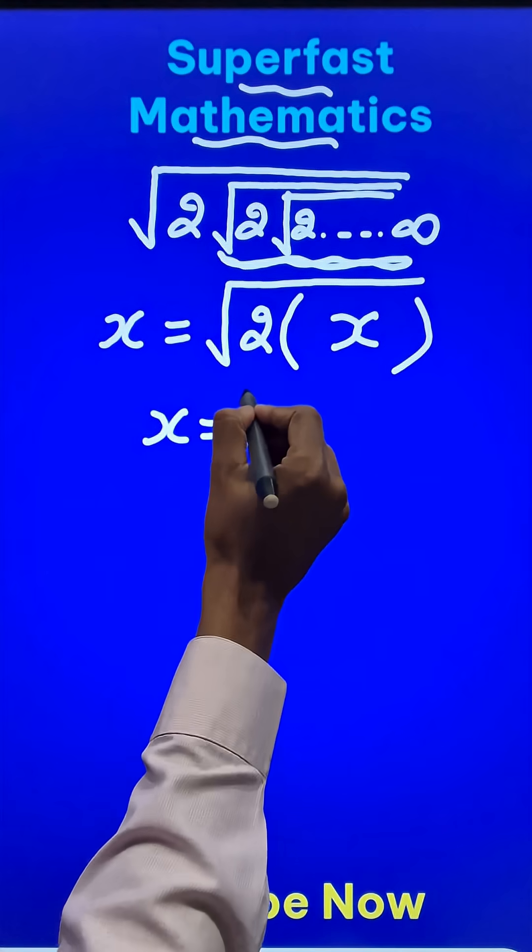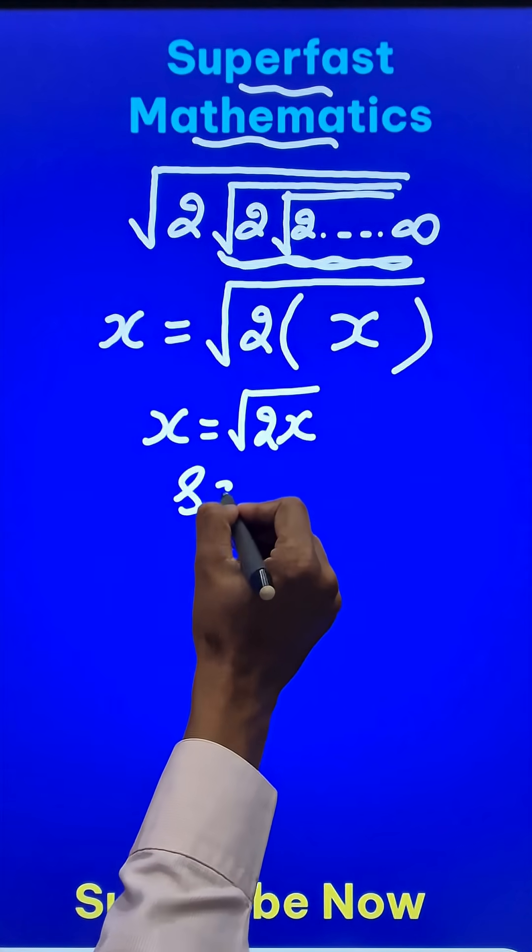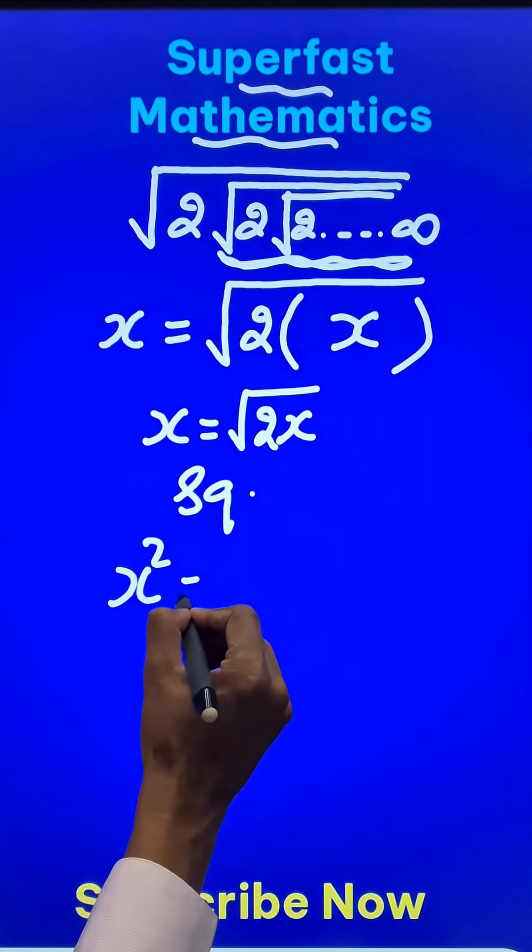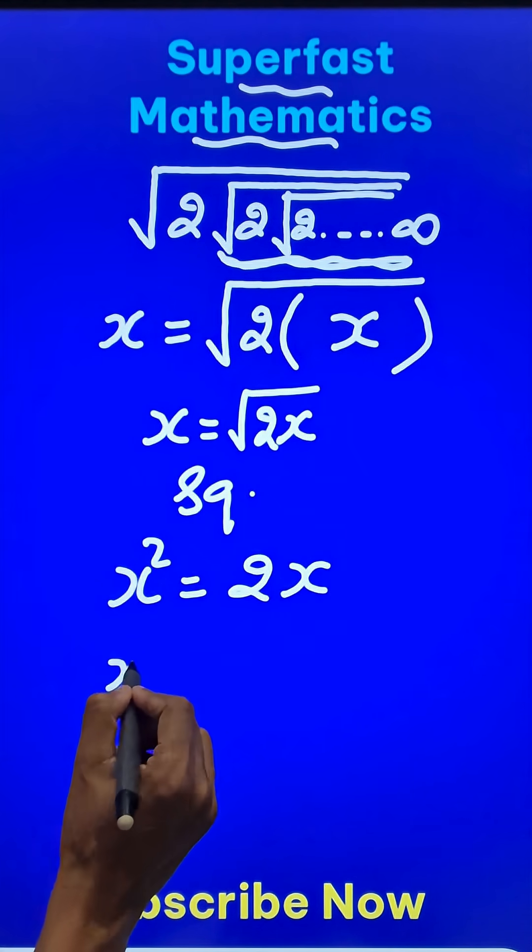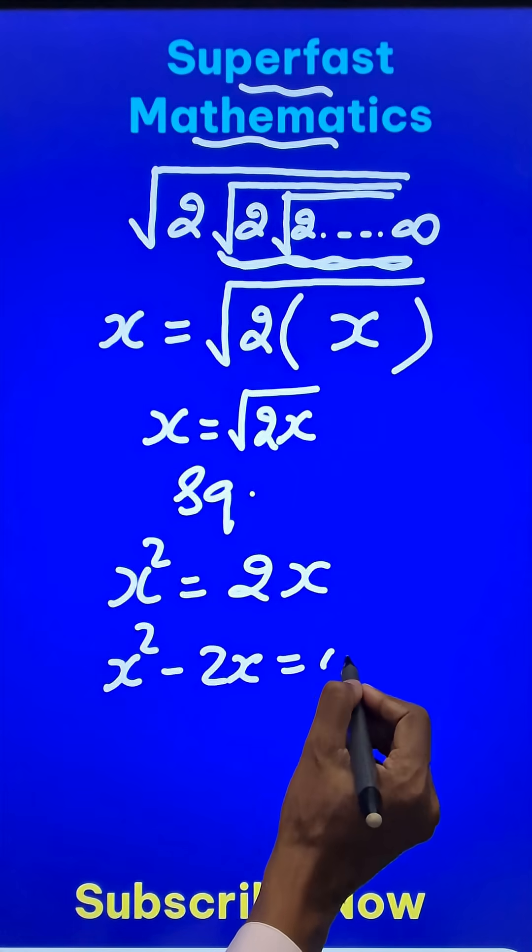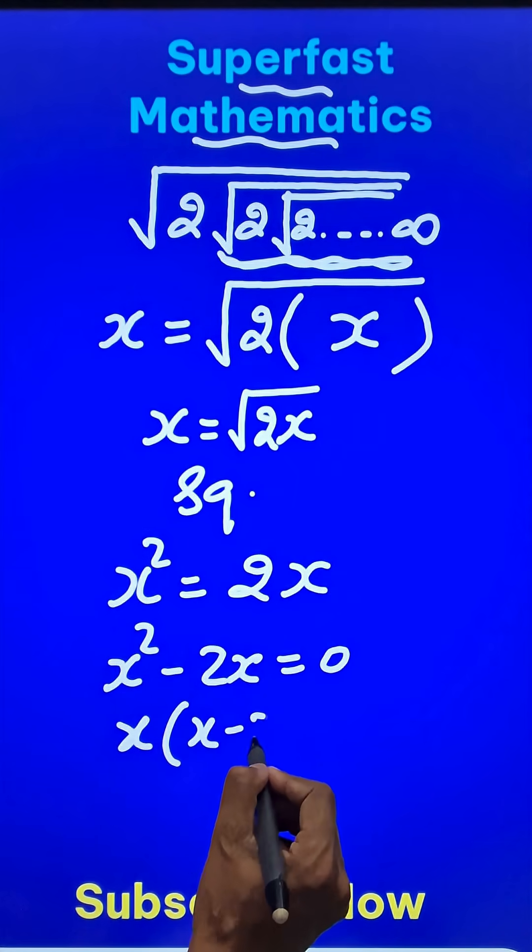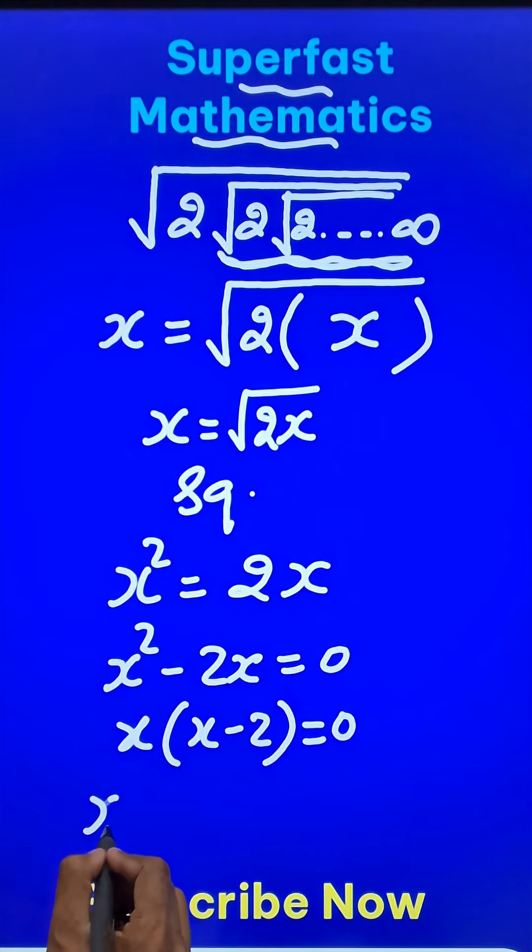So x becomes equal to square root of 2x. And when you square both sides you get x squared equal to 2x. And you can cancel x on both sides, or you can say x squared minus 2x becomes equal to 0, which gives me x times x minus 2 equal to 0.